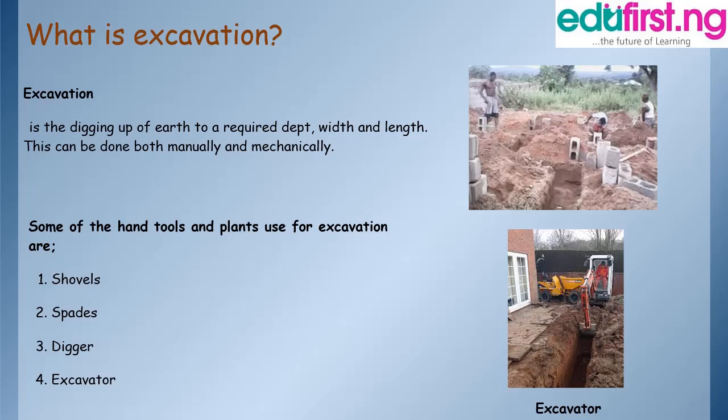Then we move on to excavation. What is excavation? Excavation is the digging of the earth to a required depth, width, and length. This can be done both manually and mechanically. The upper picture shows manual excavation of soil in preparation for foundation, and the lower picture shows a mechanical approach, which is commonly used in road construction and skyscraper construction.